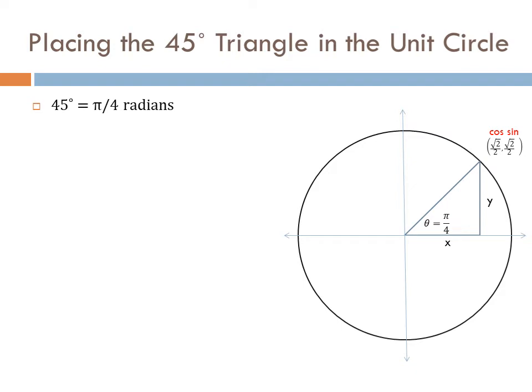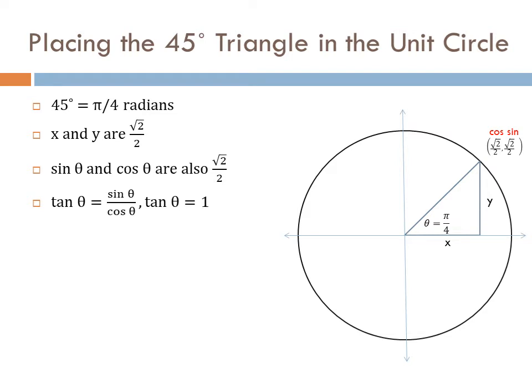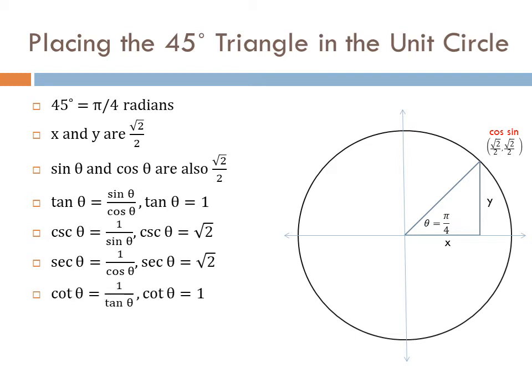Let's put the 45 degree angle in the unit circle. 45 degrees is pi over 4 radians. x and y are both the square root of 2 over 2. The sine and cosine are also the square root of 2 over 2. The tangent, sine over cosine, is 1. The cosecant is 1 over the sine, which is the square root of 2. The secant is the same. The cotangent is also 1. But remember, you only need to memorize the square root of 2 over 2. If you know the definitions of the other functions, you can derive the tangent, cosecant, secant, and cotangent.